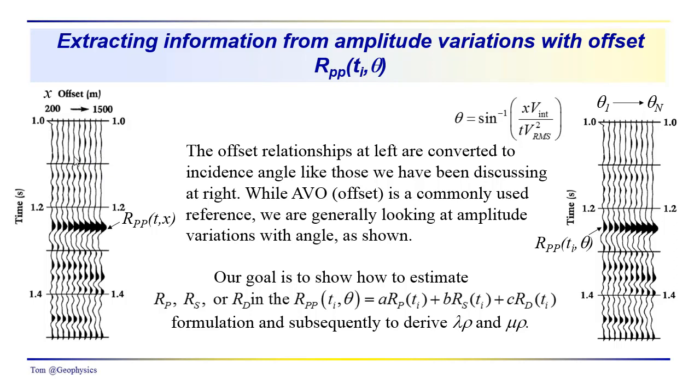These relationships over here at the left - when you collect your data, this is NMO corrected, so the reflection event has been flattened, and we're looking at the amplitudes of the reflected P wave at a particular time t and offset distance x across the source receiver offset.